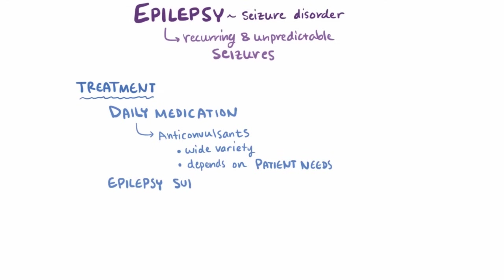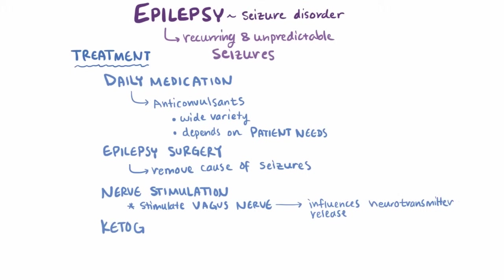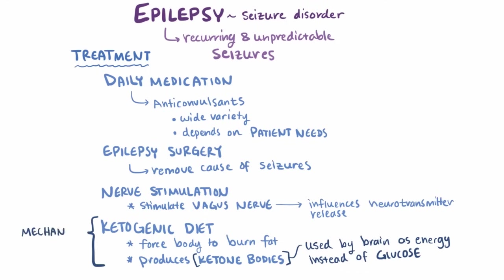Other treatment options include epilepsy surgery, where they'll remove what's thought to be causing the seizures, like a specific part of the brain or a tumor. Nerve stimulation might also be considered, where certain nerves like the vagus nerve are stimulated, which is thought to control seizures by influencing neurotransmitter release. Patients might also adopt a ketogenic diet, which forces the body to burn fat instead of carbohydrates, producing ketone bodies used by the brain as an energy source instead of glucose. Although many hypotheses have been suggested for why this seems to reduce seizures, the exact mechanism isn't very well understood.